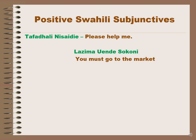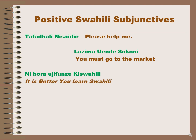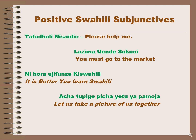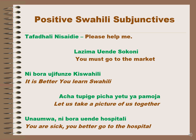Sokoni is 'at the market' or 'to the market'. Uwende is from the word kwenda, meaning 'to go'. Ni bora ujifunze Kiswahili means 'it is better you learn Swahili'. Acha tupige picha yetu ya pamoja means 'let us take a picture of us together'. The subjunctives here are: nisaidiye, ujifunze, tupige, and uwende. For example: unaumwa, ni bora uwende hospitali — 'you are sick, you better go to the hospital'.